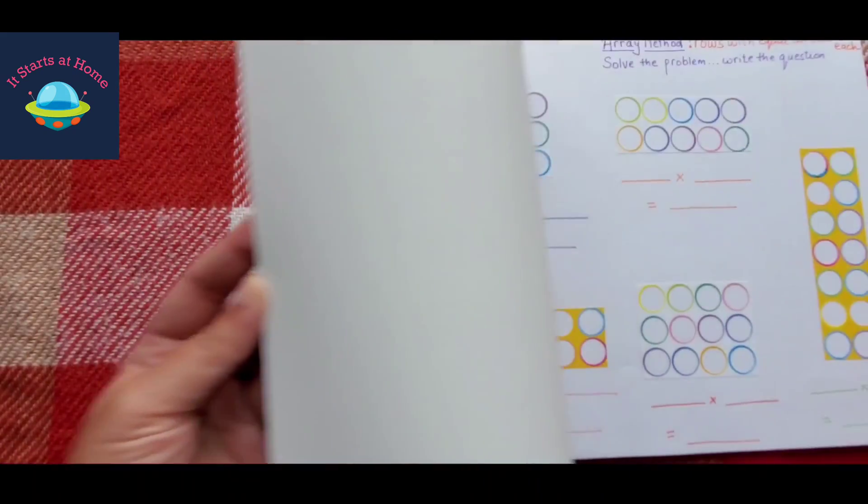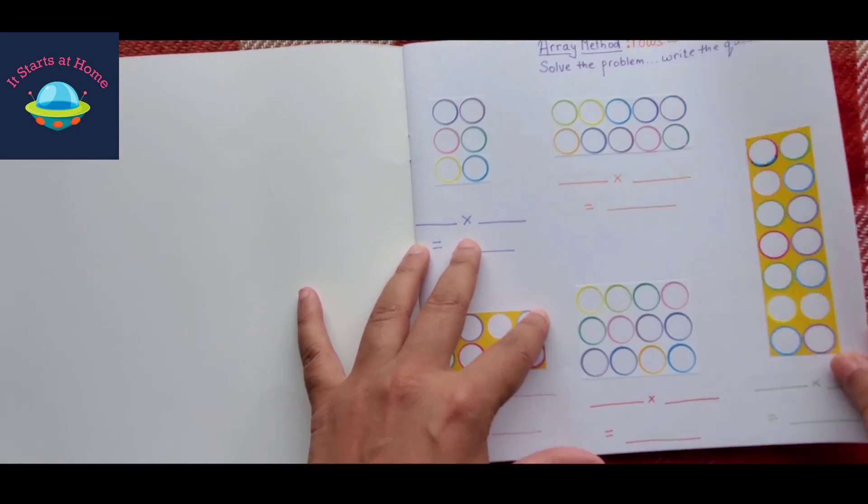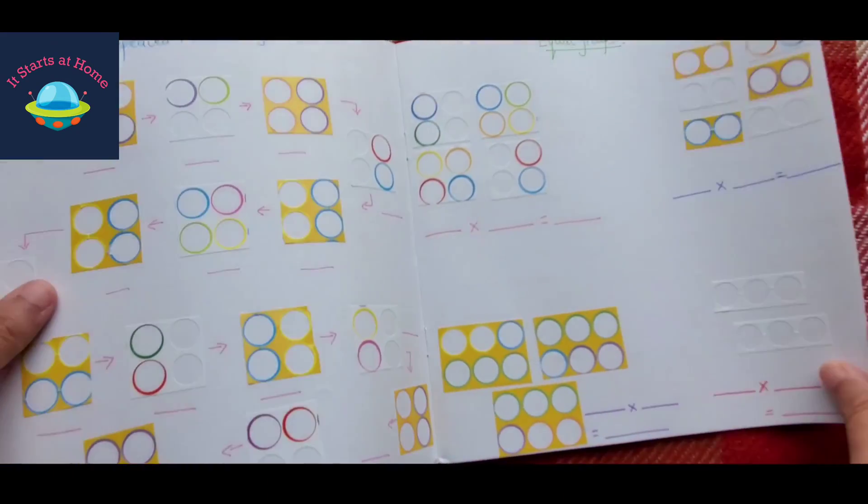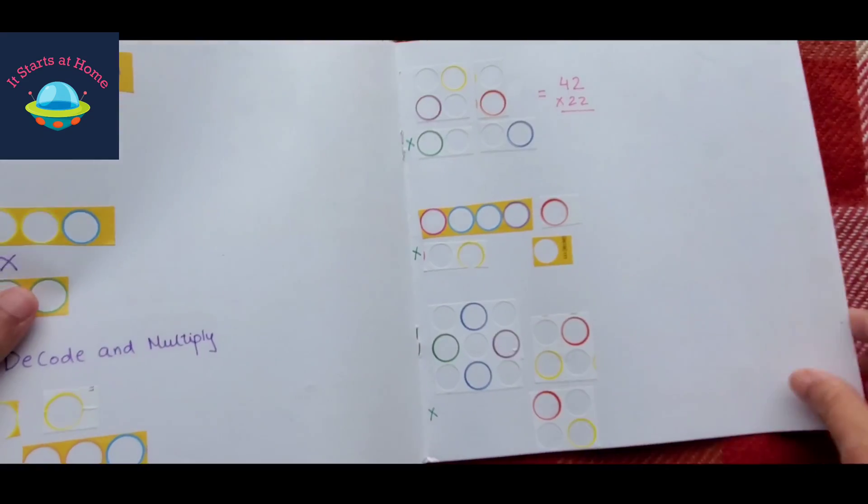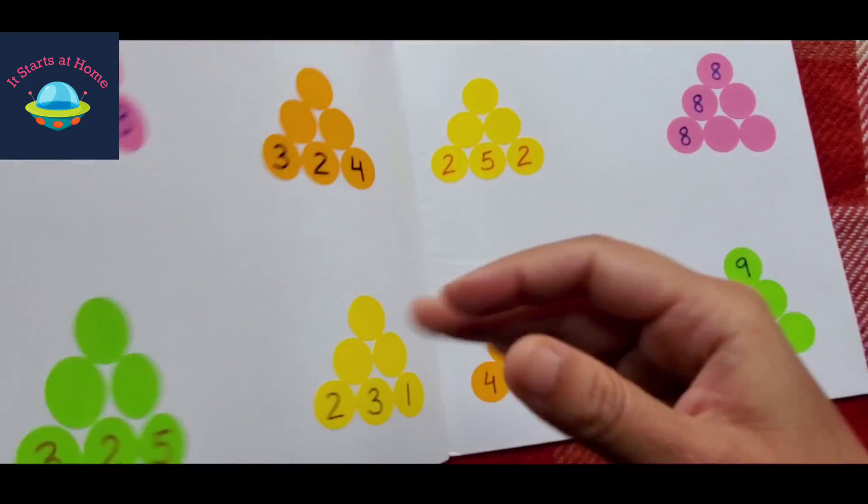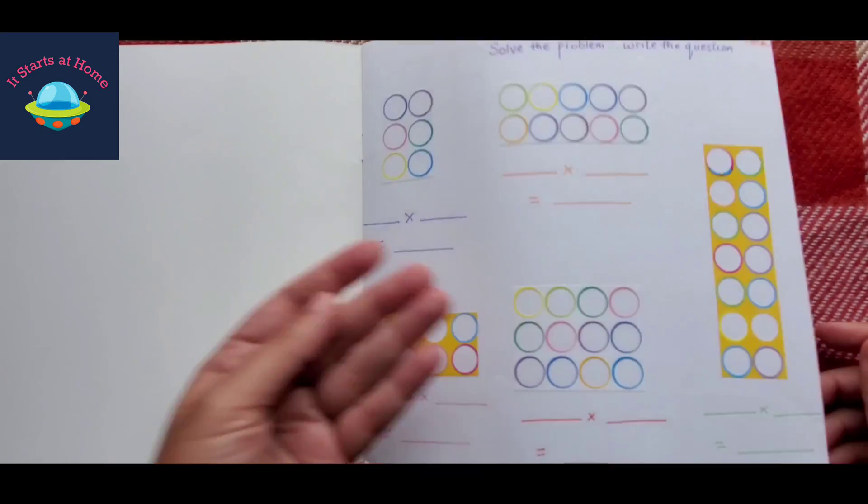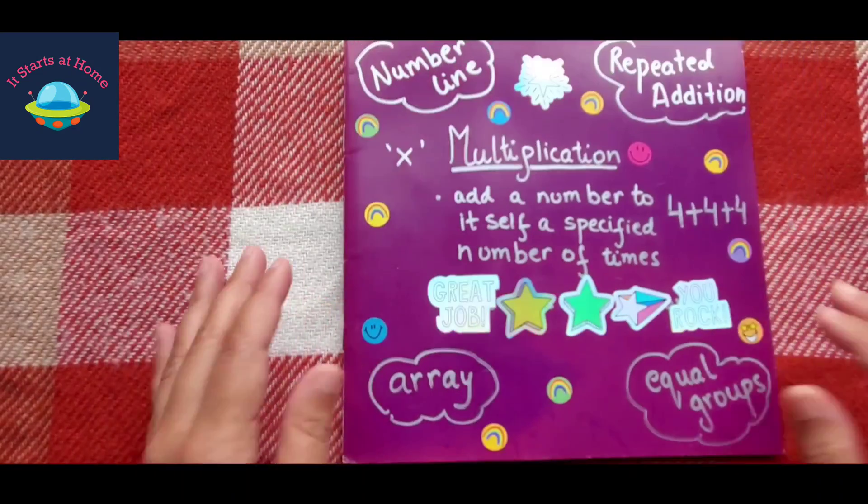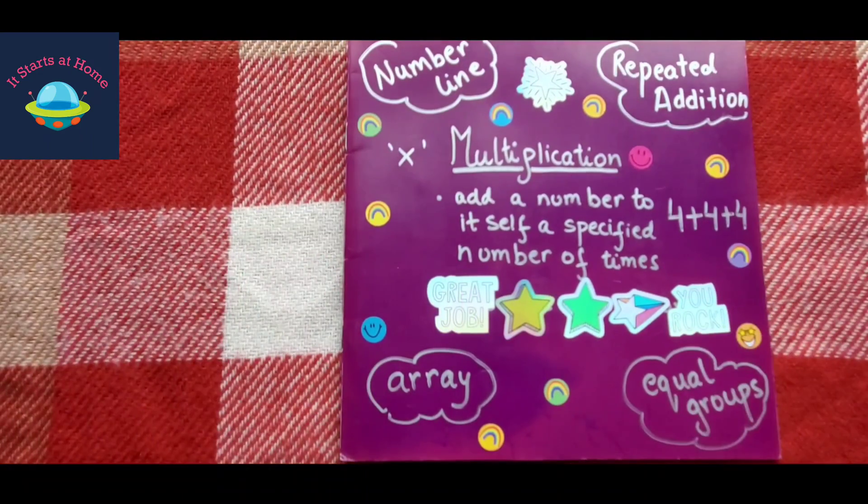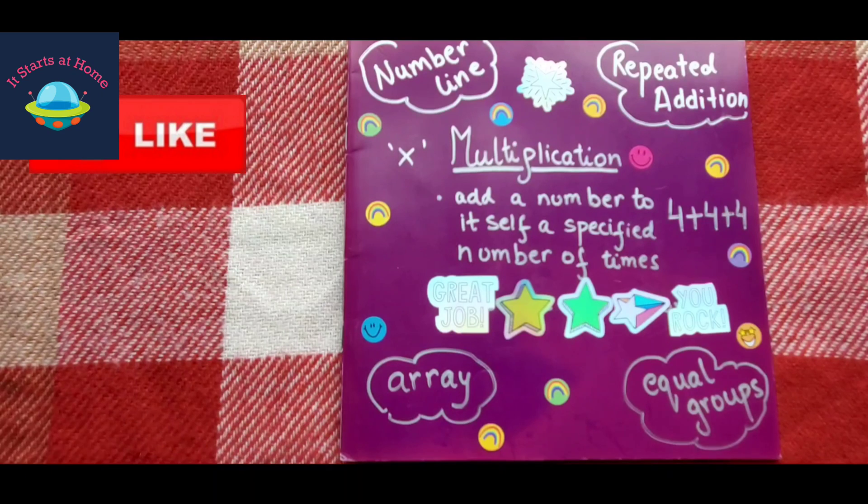So guys, this was a pretty cool book and I feel like we have a lot of activities here. If I count like 1, 2, 3, 4, 5, 6, 7, 8, 9, you have nine different activities to do in multiplication with your kids. If you like it, please don't forget to give me a thumbs up.